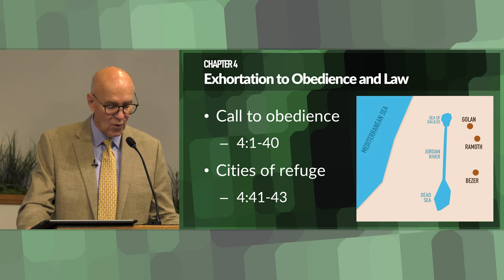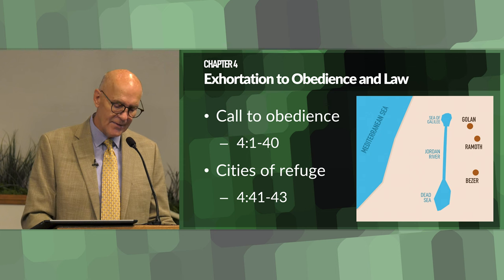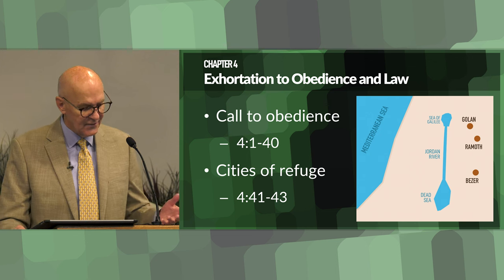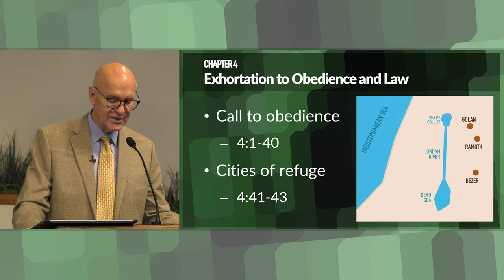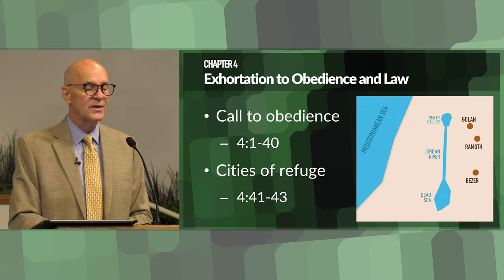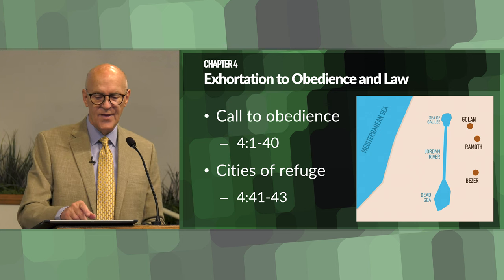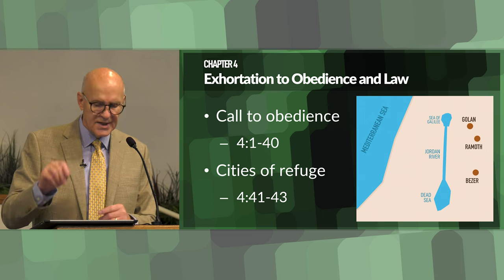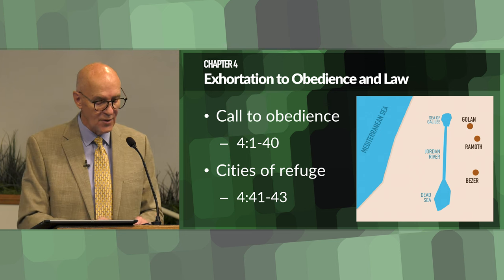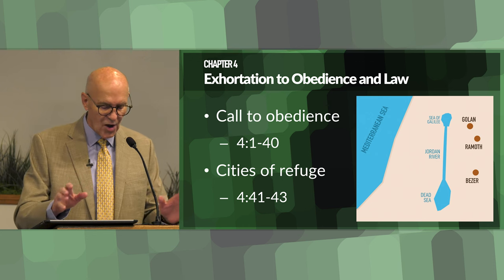Also in chapter four, information about the cities of refuge — Deuteronomy 4:41–43 — the establishment of cities of refuge east of the Jordan River. This illustrates the provision of justice and mercy within the legal system of Israel, providing sanctuaries for those accused of manslaughter until they can obtain a fair trial. It shows that even on the eastern side of the Jordan, cities of refuge were established so that someone needing that refuge had access to it, whether on the west side or east side of the river.